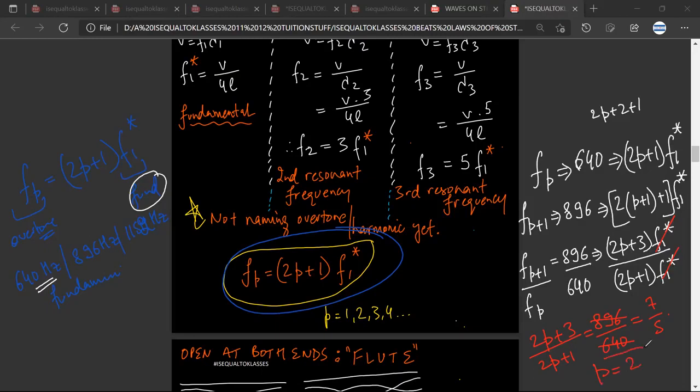The value of p is equal to 2. So f1 star is equal to 640 upon (2p+1), which is 640 upon 5, which equals 128 hertz. That's your answer.